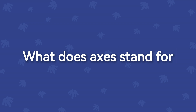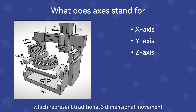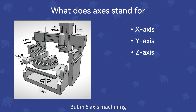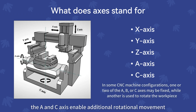What does axis stand for? There are X, Y, and Z axes, which represent traditional three-dimensional movement. But in 5-axis machining, the A and C axes enable additional rotational movement.